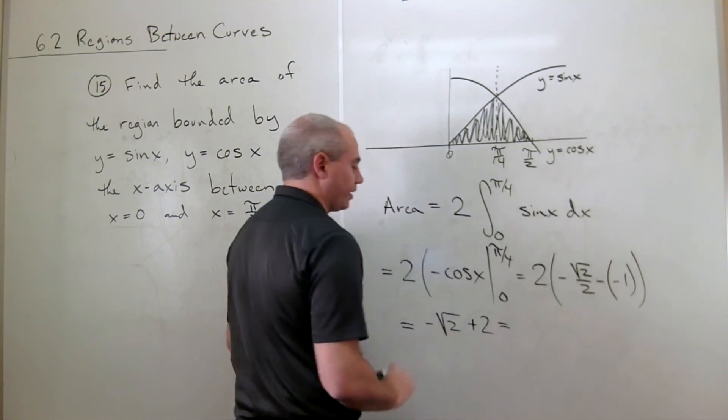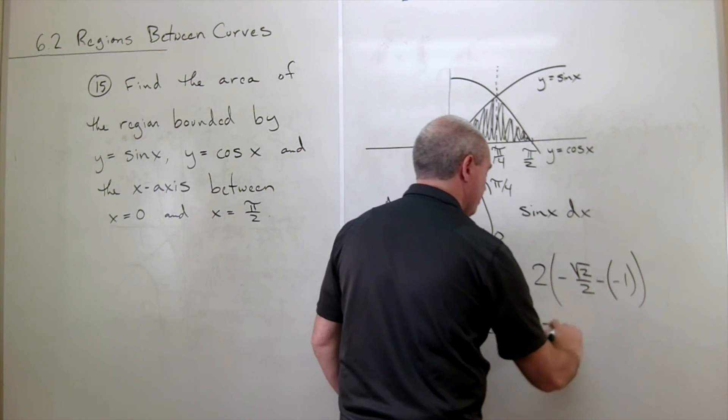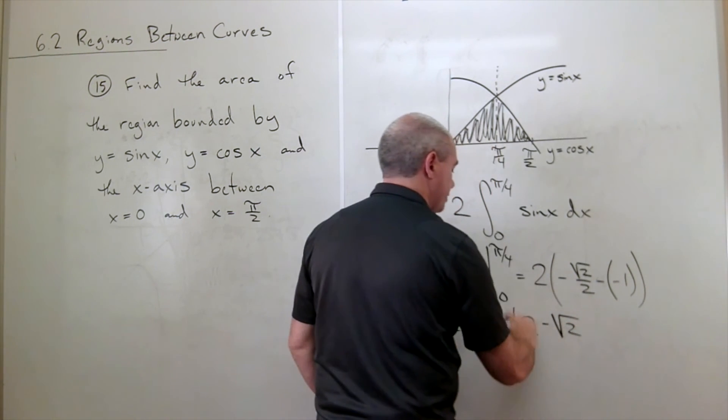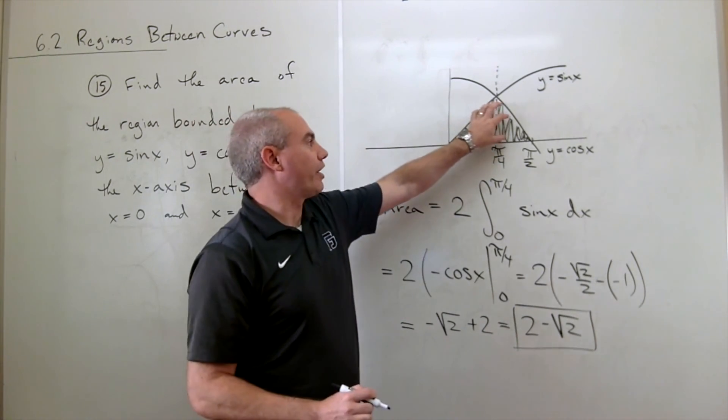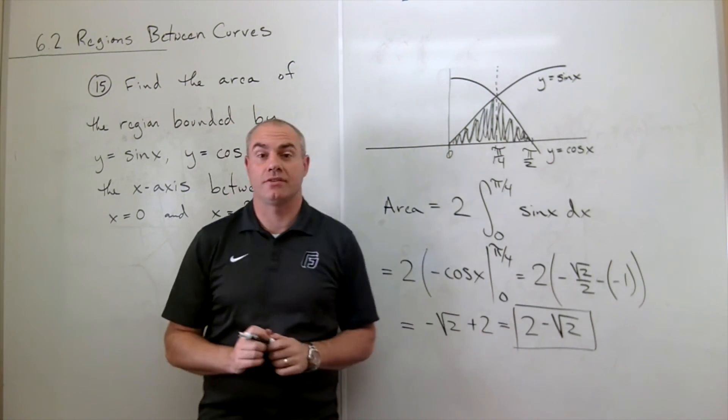If you want to write that the other way, that's fine. This is 2 minus root 2, and we have the area enclosed in our region.